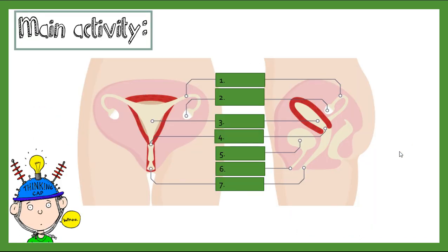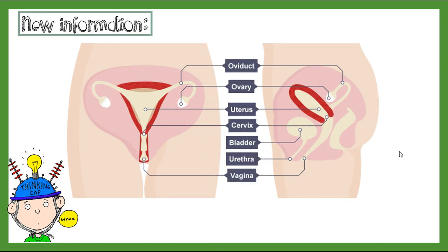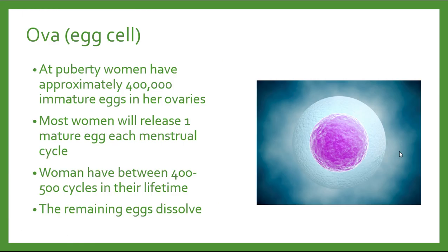Here is a diagram of the female reproductive system — pause this video and identify the key structures. The ova, the egg cells, are the main cells of the female reproductive system. They are produced and mature within the ovary. At puberty, females will have approximately 400,000 mature eggs within the ovaries, with one being released with each menstrual cycle. Typically, females will have between 400 and 500 cycles during their lifetime, with any remaining eggs dissolving.